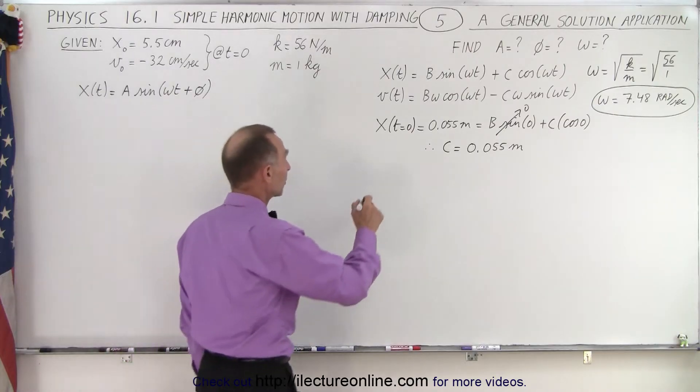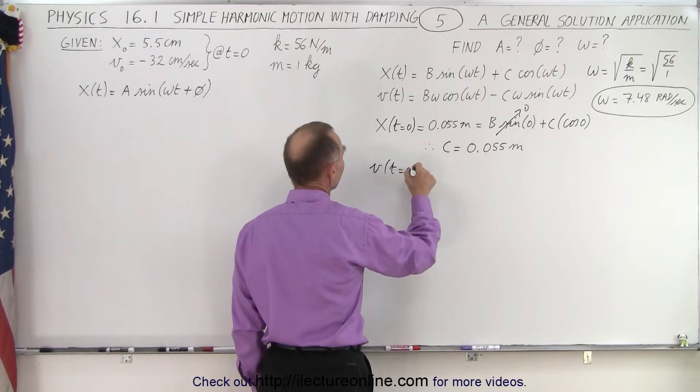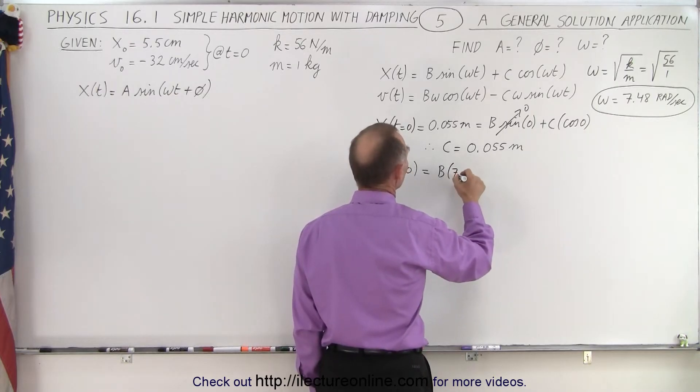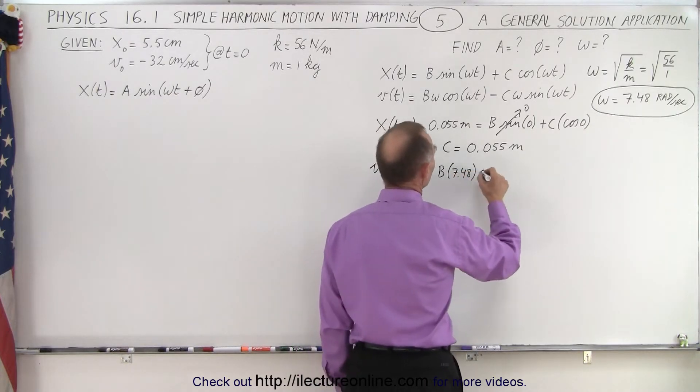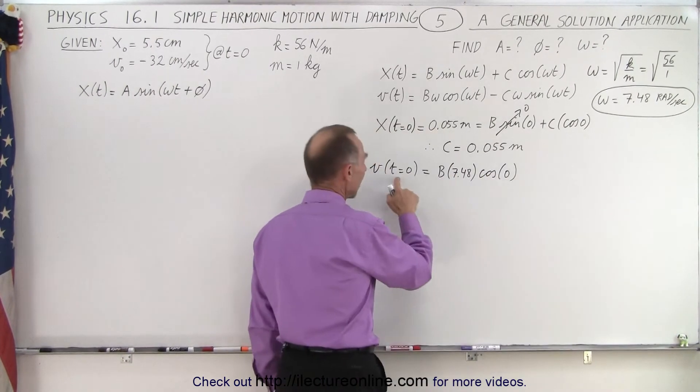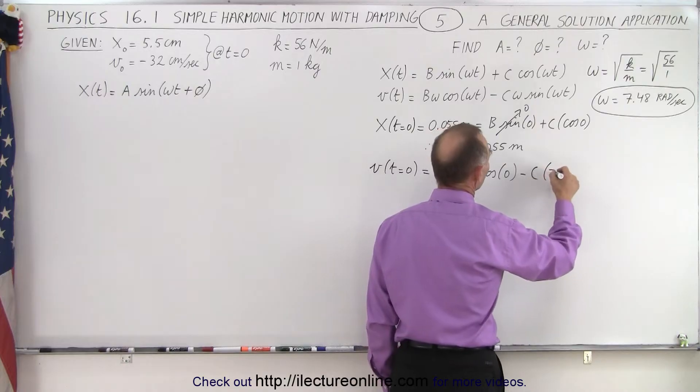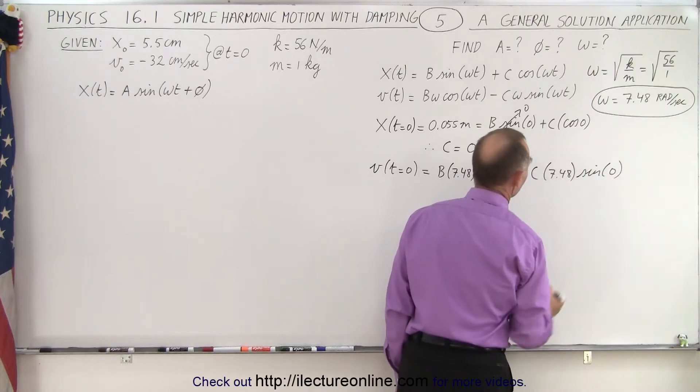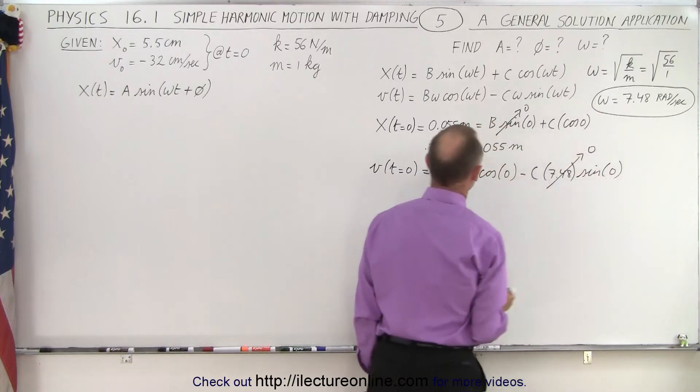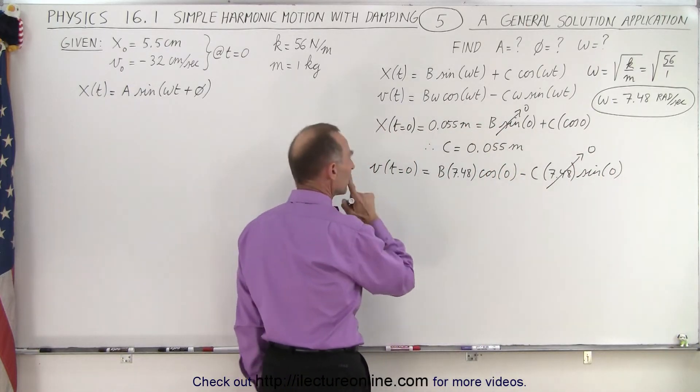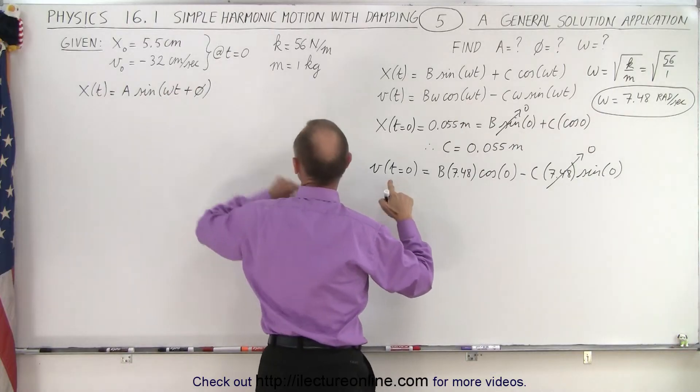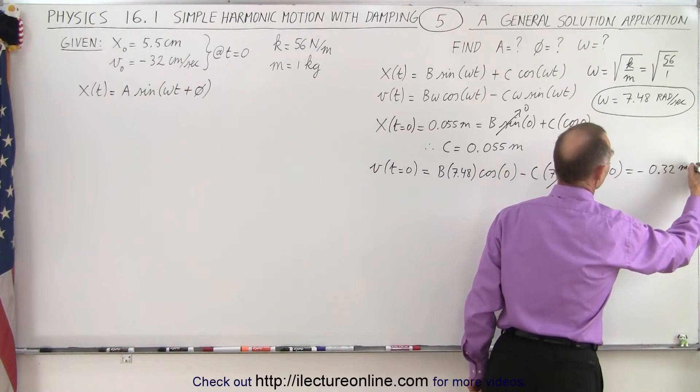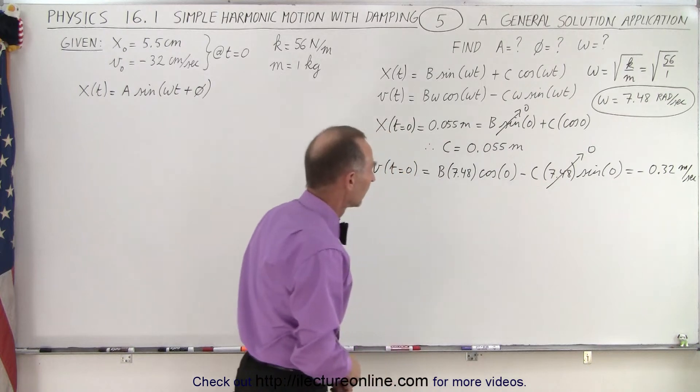Next we use the velocity equation. Velocity as a function of time when time equals zero is equal to B times omega, which is 7.48, times the cosine of zero, minus C times 7.48 times the sine of zero. The sine of zero is zero, so this term disappears. The cosine of zero is 1, and don't forget that is equal to minus 32 centimeters per second, or minus 0.32 meters per second.